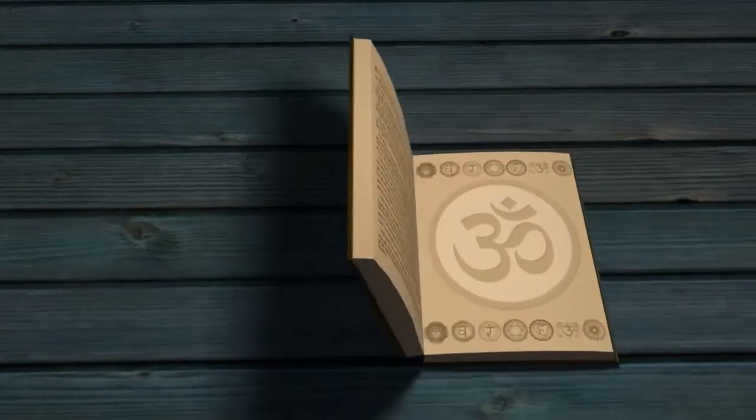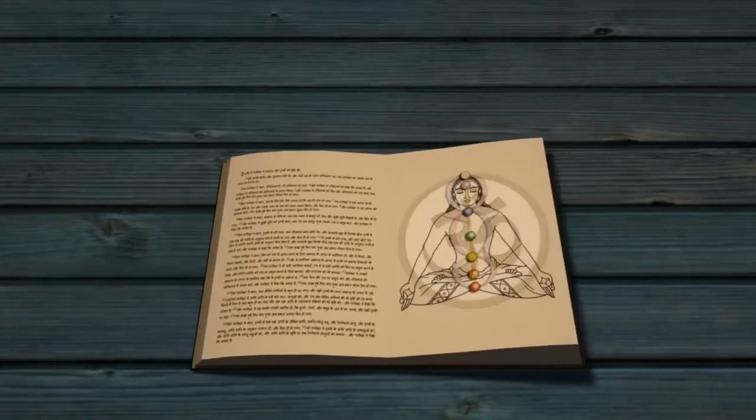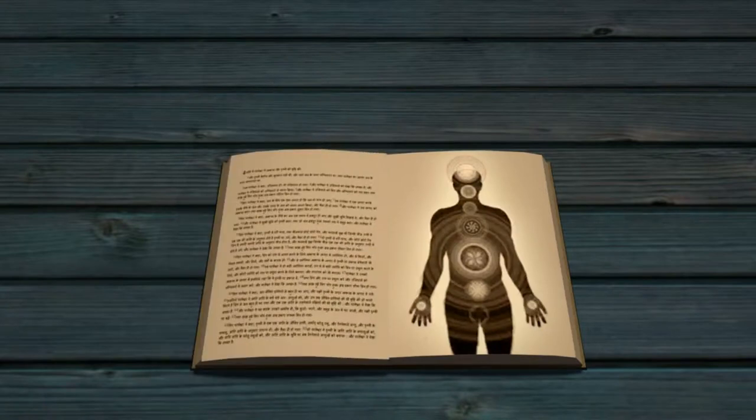Upanishads states the five kosh yoga or doctrine of the three bodies, the core essence of which is to realize the supreme self.